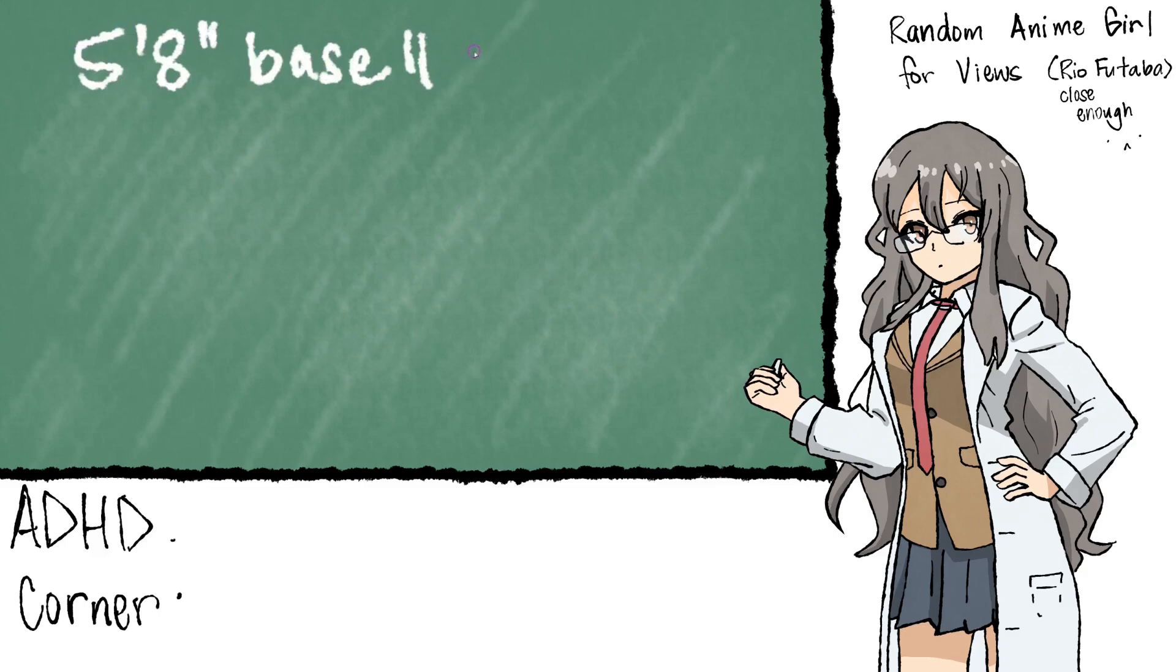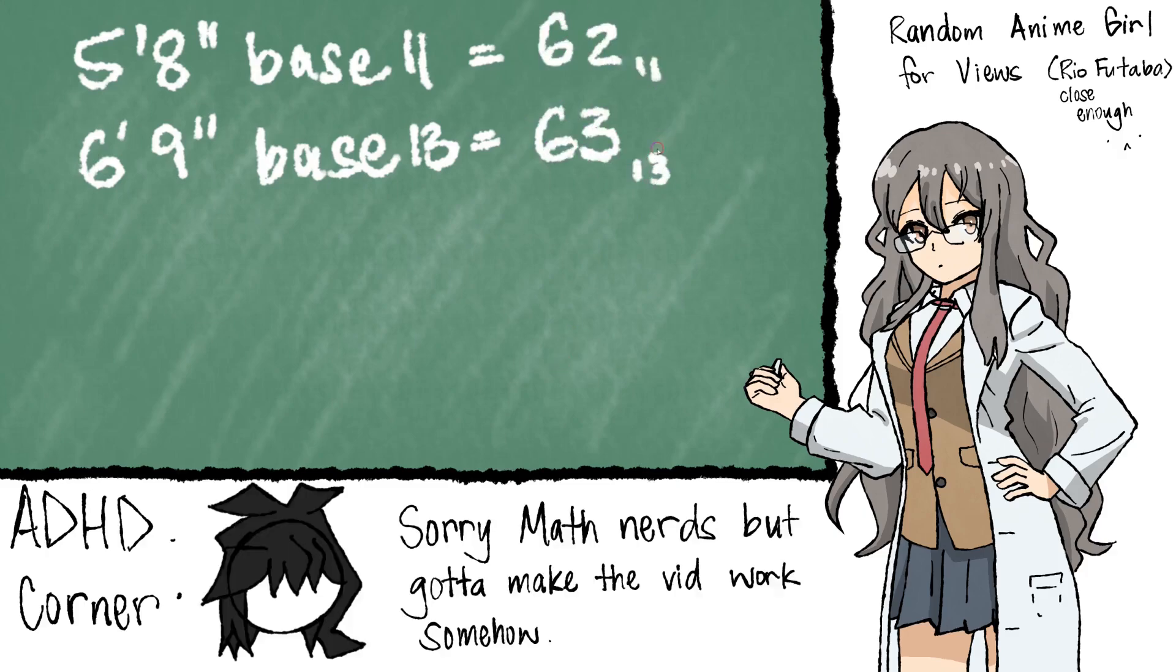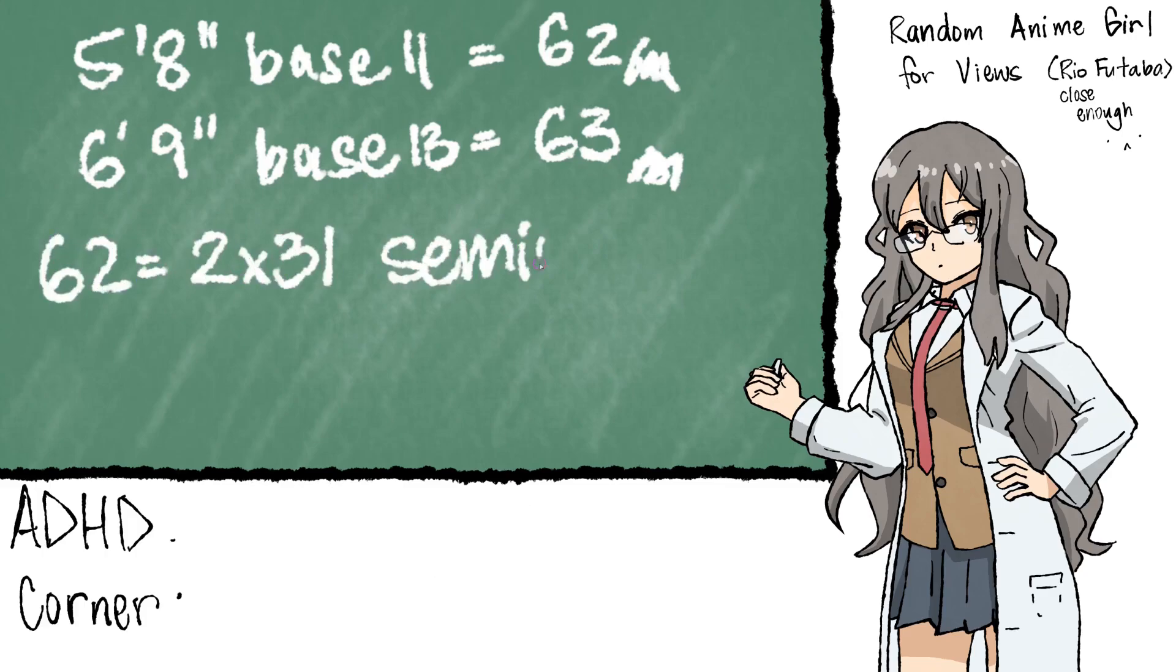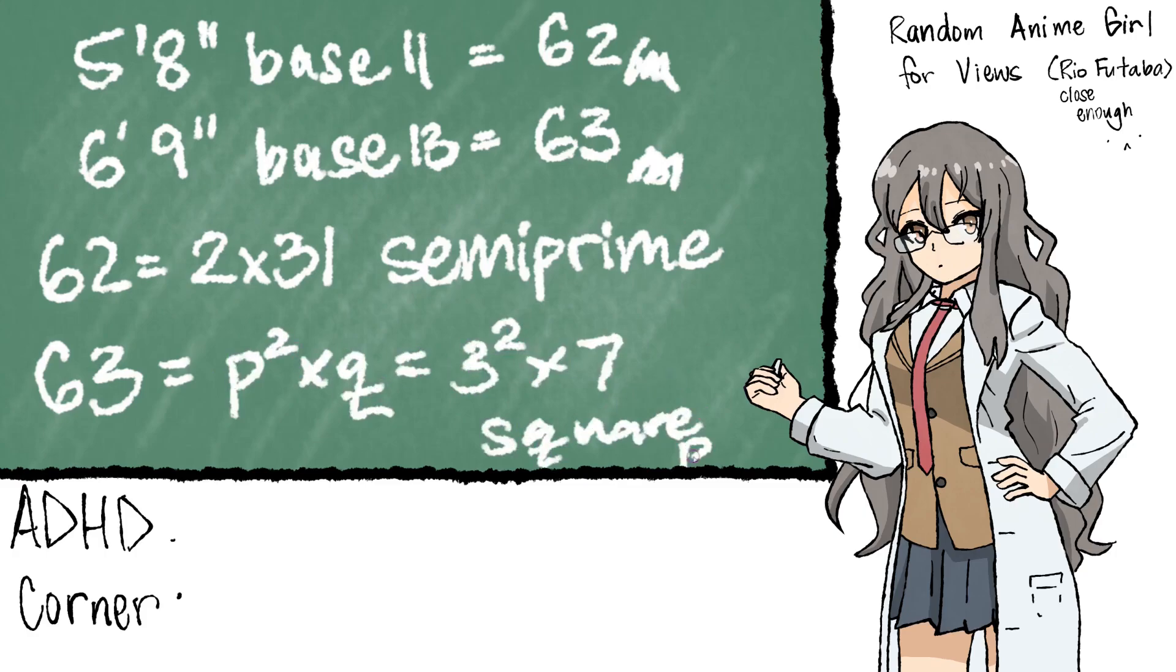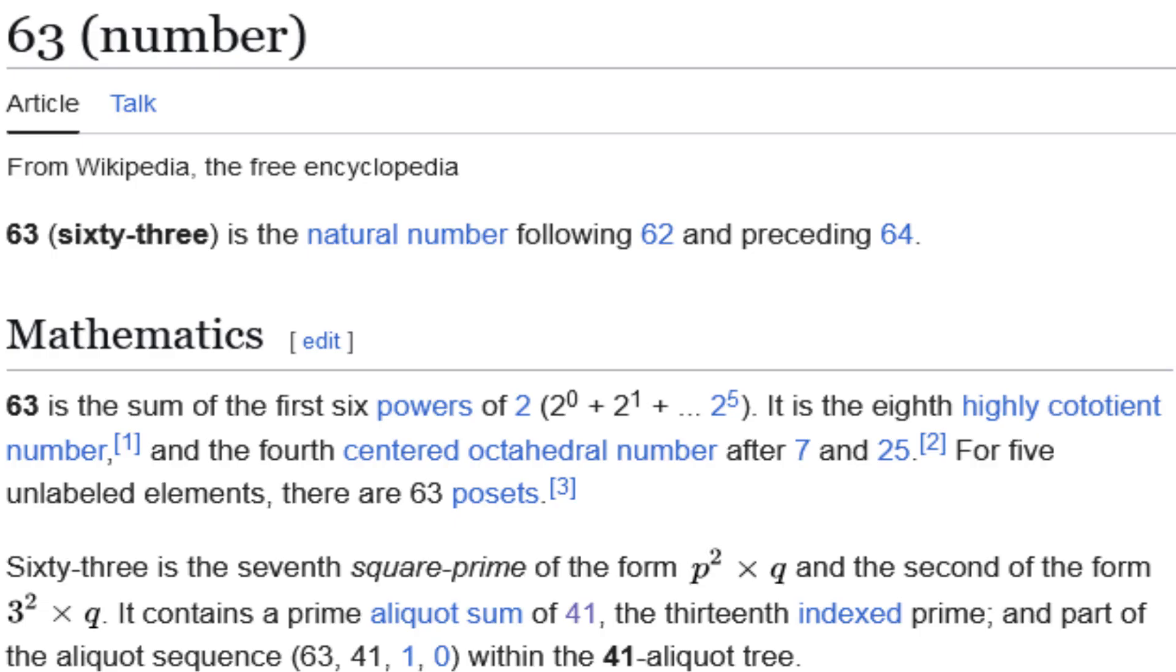If we represent 5'8" in base 11, and 6'9" in base 13, we'd get 62 and 63, respectively. If we conveniently ignore their bases and do everything in base 10, then 62 is considered semi-prime, it's the product of two prime numbers. And 63 is apparently square prime, although I could only find it referenced this way in this specific Wikipedia article.